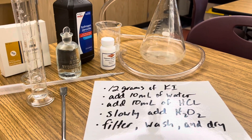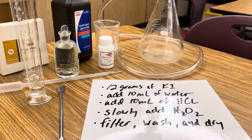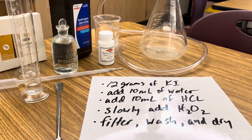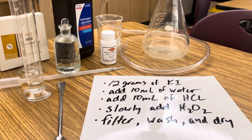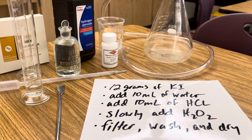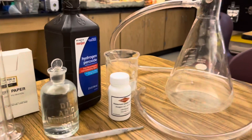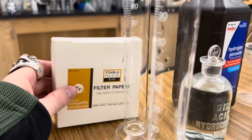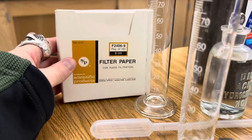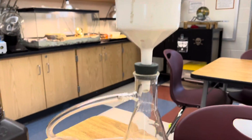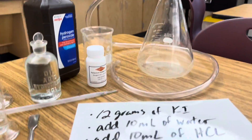All you need for this reaction is 12 grams of potassium iodide, about 10 milliliters of distilled water, 10 milliliters of hydrochloric acid, and some 3% hydrogen peroxide, some filter paper to filter off your iodine at the end, a spatula, and of course a flask with a filter attached to a vacuum pump.